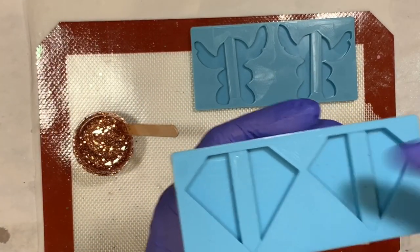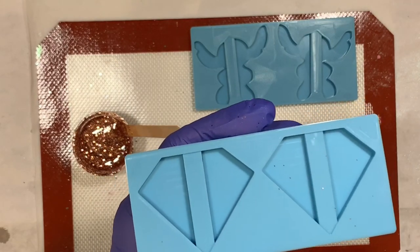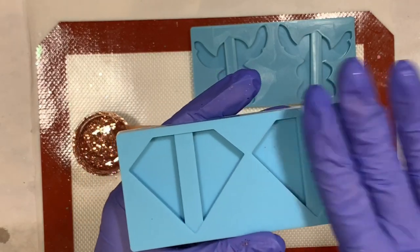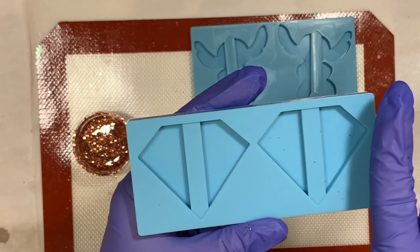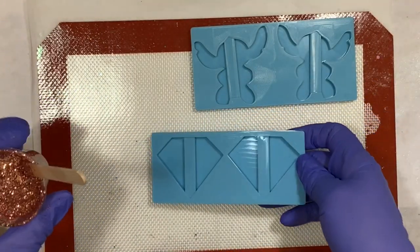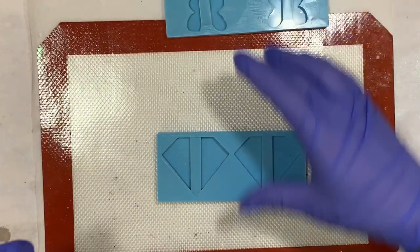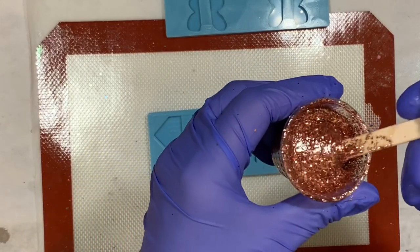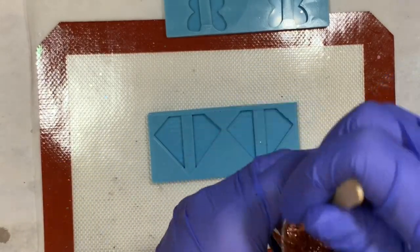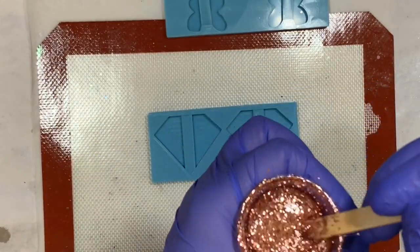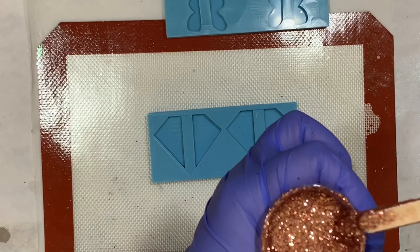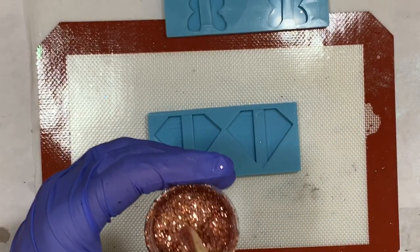Keep in mind the bottom of the mold is actually going to be the inside of the straw topper that you're not going to see. The top part is what you'll see, so when you're mixing in glitter, you're going to want to make sure there's plenty in there so it doesn't sink to the bottom.